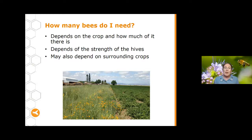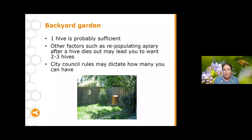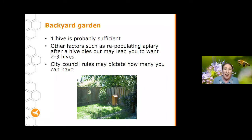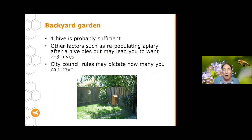If you've got a backyard garden, most of the time one hive is probably quite sufficient. There might be other factors that change your mind about how many hives you want — for instance, to make sure you can repopulate your apiary after a hive dies out. That's what led me from one beehive to more — when I had a hive die out I had nothing to split. So that often leads people to get two or three hives. Keep in mind that different city councils have different rules about how many hives you can have, so check with your council.